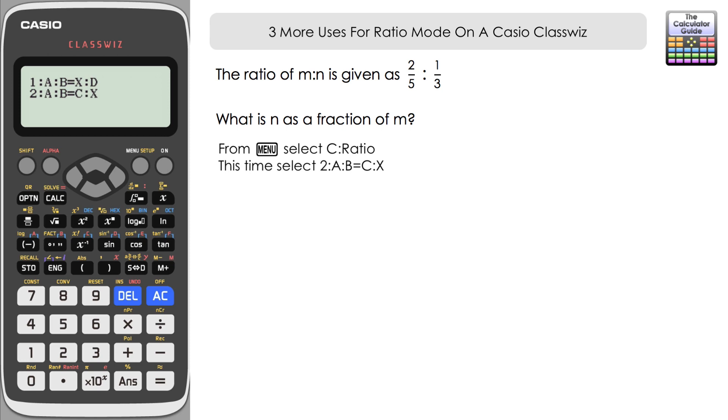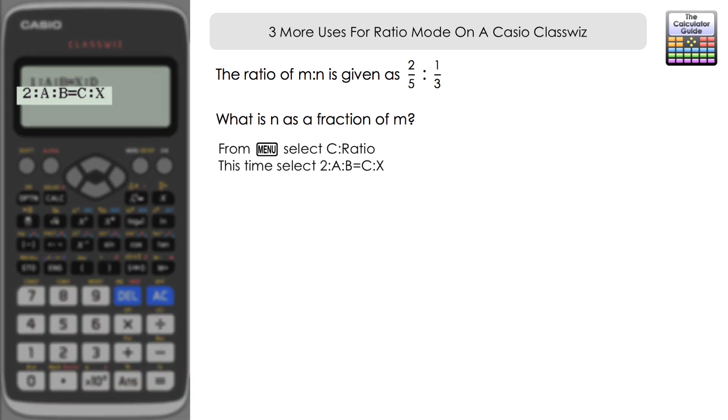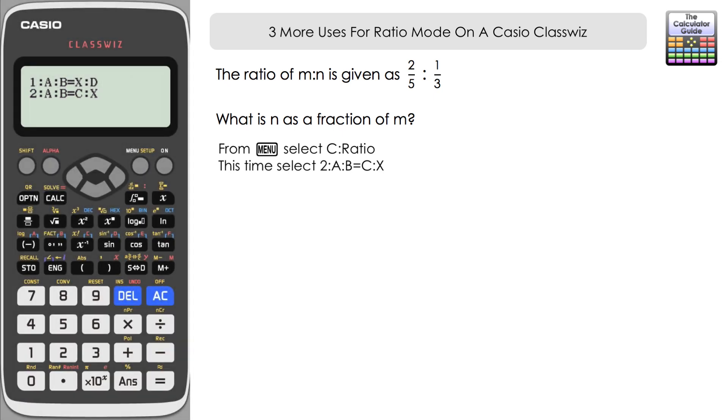We can use ratio mode to help us out with this. This time we're going to choose option 2. Because as we're looking at it, m is on the left-hand side of the ratio, the two-fifths, and one-third is the n on the right-hand side of the ratio. We're looking for n. So we want the unknown to be on the right-hand side. So we're going to choose option 2, A to B equals C to X.